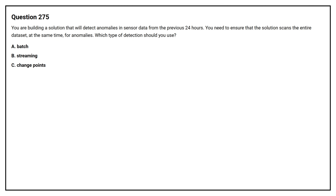Question number 275. You are building a solution that will detect anomalies in sensor data from the previous 24 hours. You need to ensure that the solution scans the entire data set at the same time for anomalies. Which type of detection should you use? Option A: Batch. Option B: Streaming. Option C: Change points.